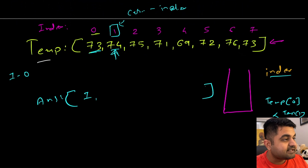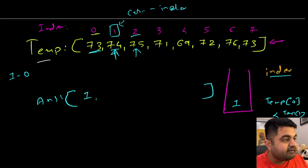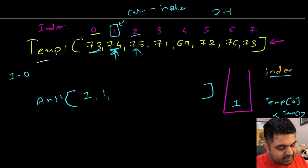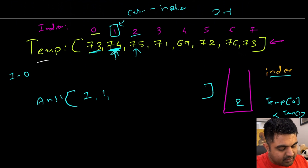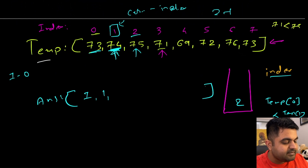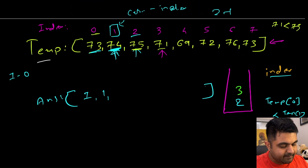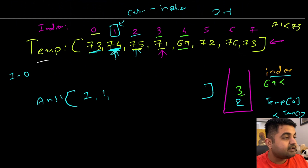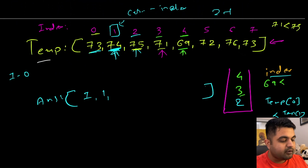We push index 1 onto the stack. Now at index 2, value 75 — 75 is greater than 74, so we do 2 minus 1, answer is 1. We pop index 1 and push index 2. Now at index 3, value 71 — 71 is smaller than 75, so we haven't found a warmer day for 75. We add index 3. At index 4, value 69 — 69 is less than the current stack top, so we also add index 4, as we haven't found a warmer day for this top element either.